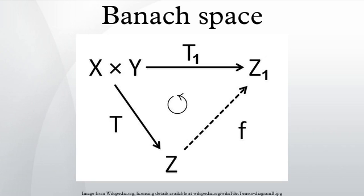A Banach algebra is a Banach space A over K = ℝ or ℂ, together with a structure of algebra over K, such that the product map A × A → A is continuous. An equivalent norm on A can be found so that ‖ab‖ ≤ ‖a‖‖b‖ for all a, b in A. Examples: the Banach space C(K) with the pointwise product is a Banach algebra.